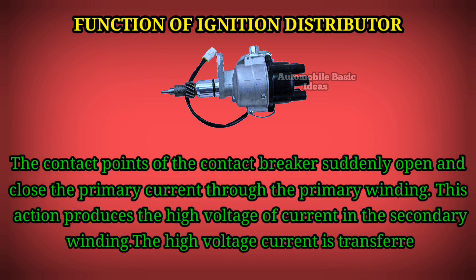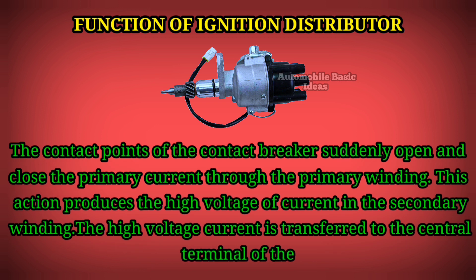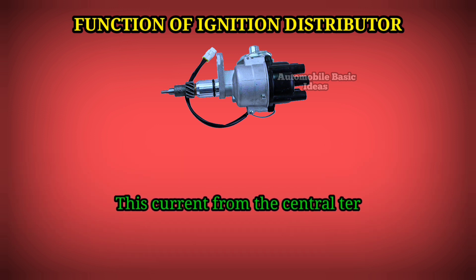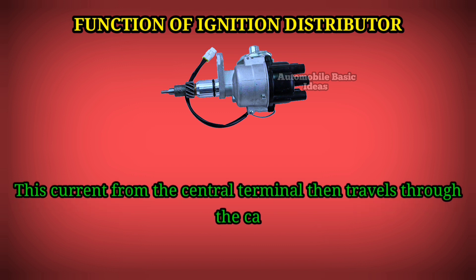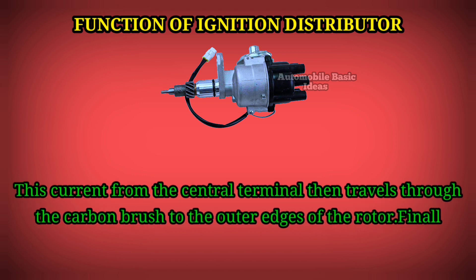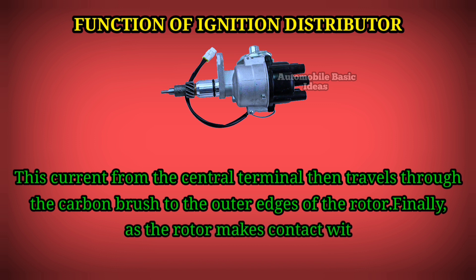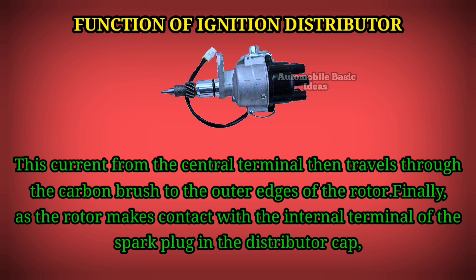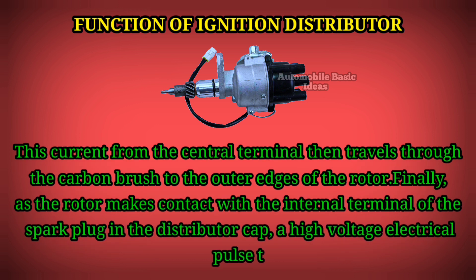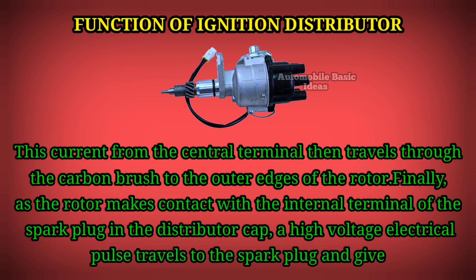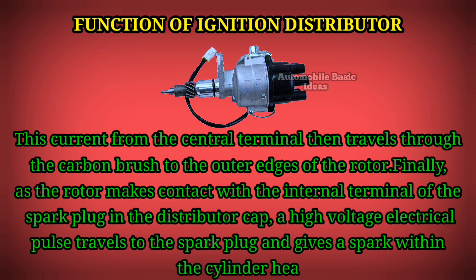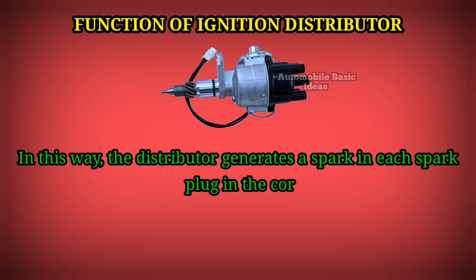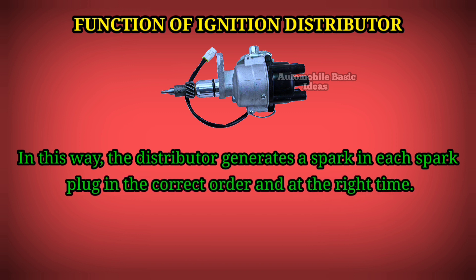The high voltage current is transferred to the central terminal of the ignition distributor. This current from the central terminal then travels through the carbon brush to the outer edges of the rotor. Finally, as the rotor makes contact with the internal terminal of the spark plug in the distributor cap, a high voltage electrical pulse travels to the spark plug and gives a spark within the cylinder head. In this way, the distributor generates a spark in each spark plug in the correct order and at the right time.